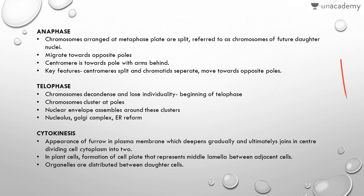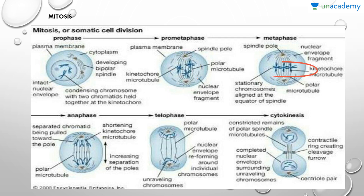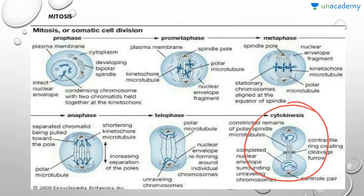Looking at the diagram: in prophase there is condensation of chromosomes; in pro-metaphase the spindle apparatus forms; in metaphase chromosomes appear at the equator forming the metaphasic plate; V-shaped centromeres with arms left behind are seen in anaphase; in telophase chromosomes form compact structures losing individuality; and in cytokinesis the cleavage furrow forms and divides the cytoplasm into two daughter cells.